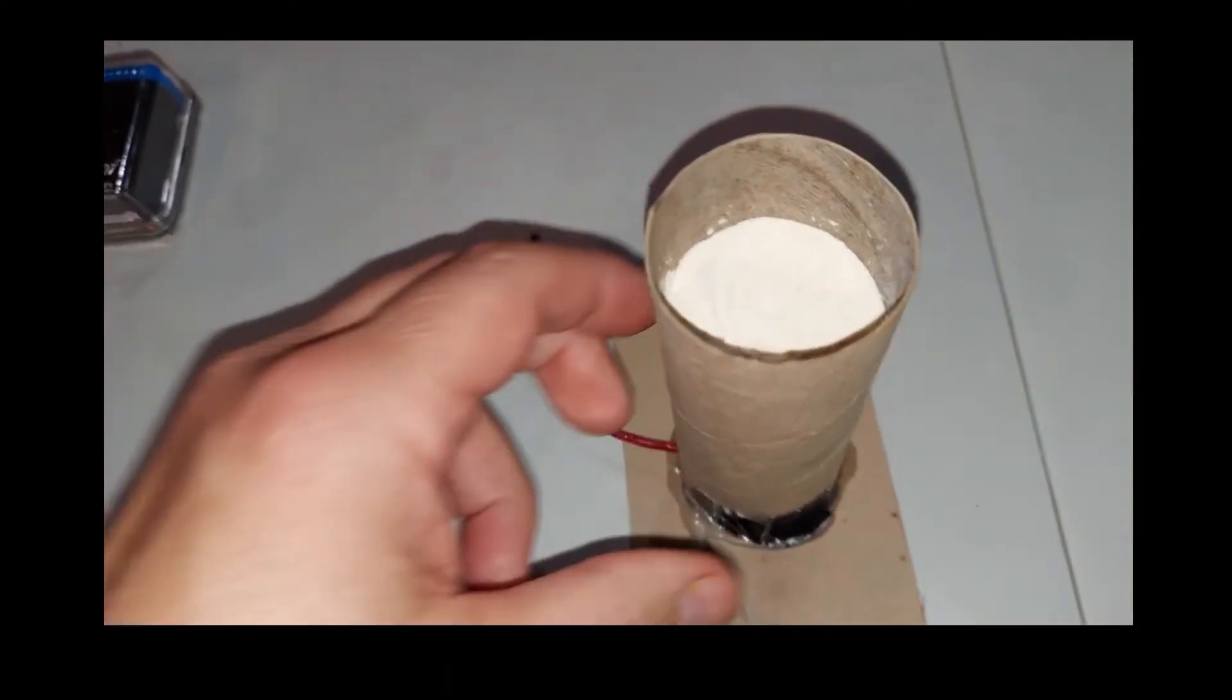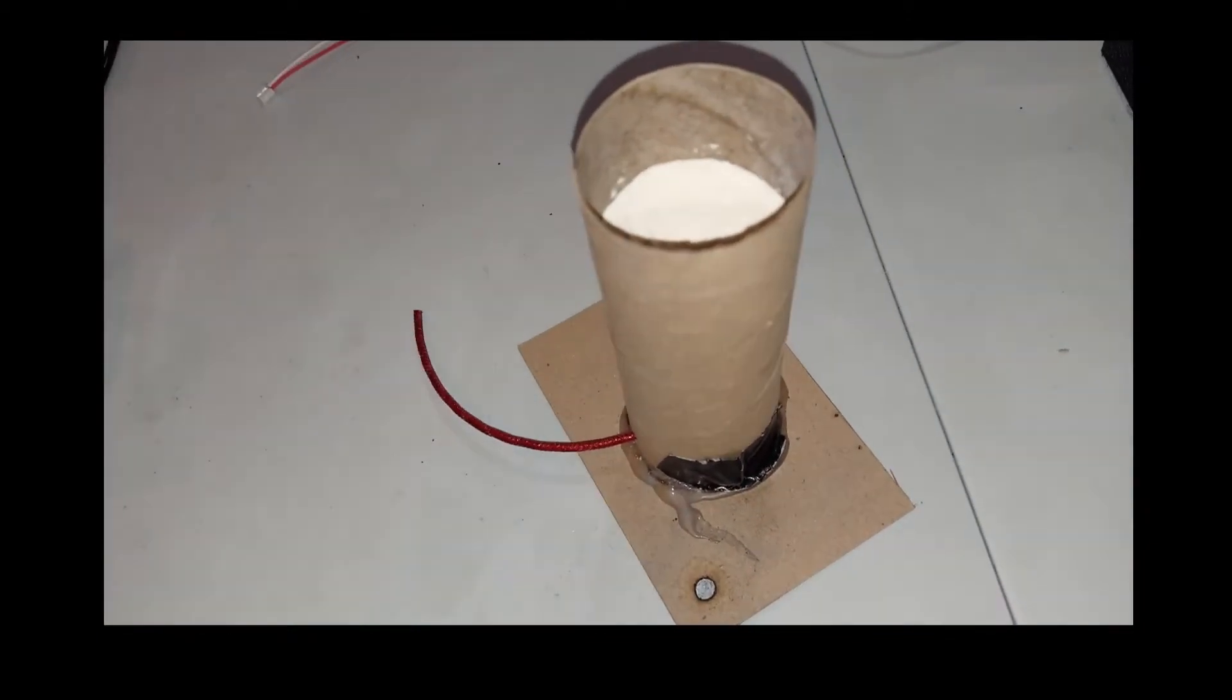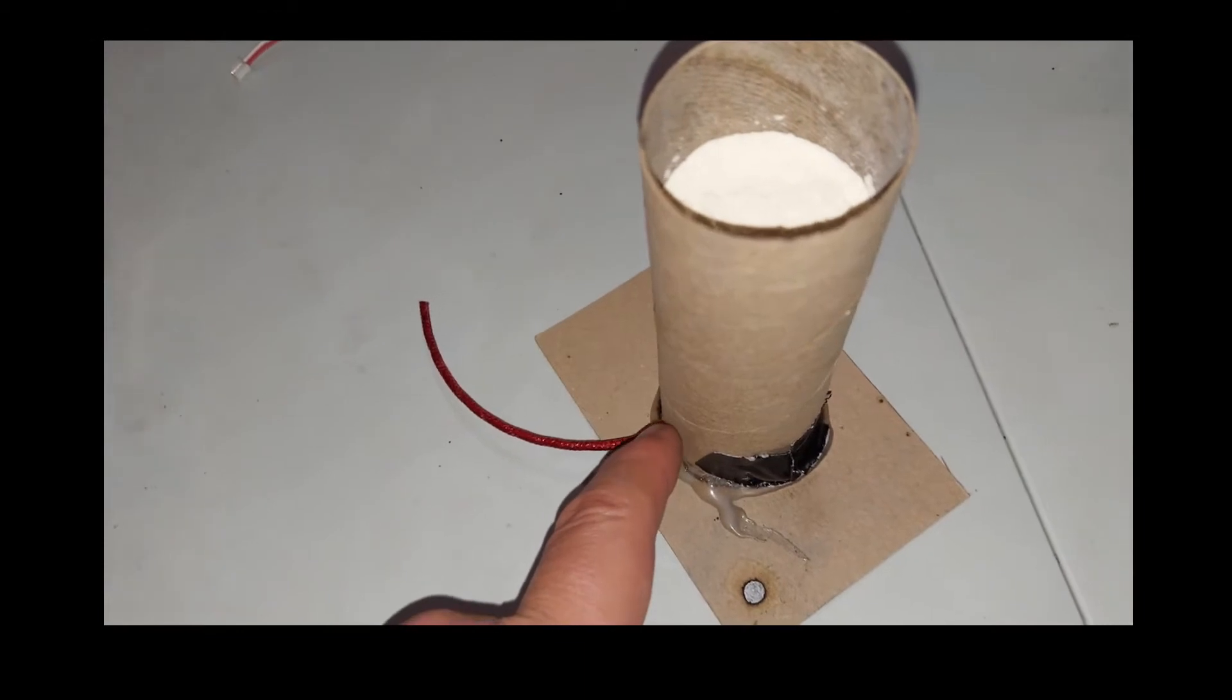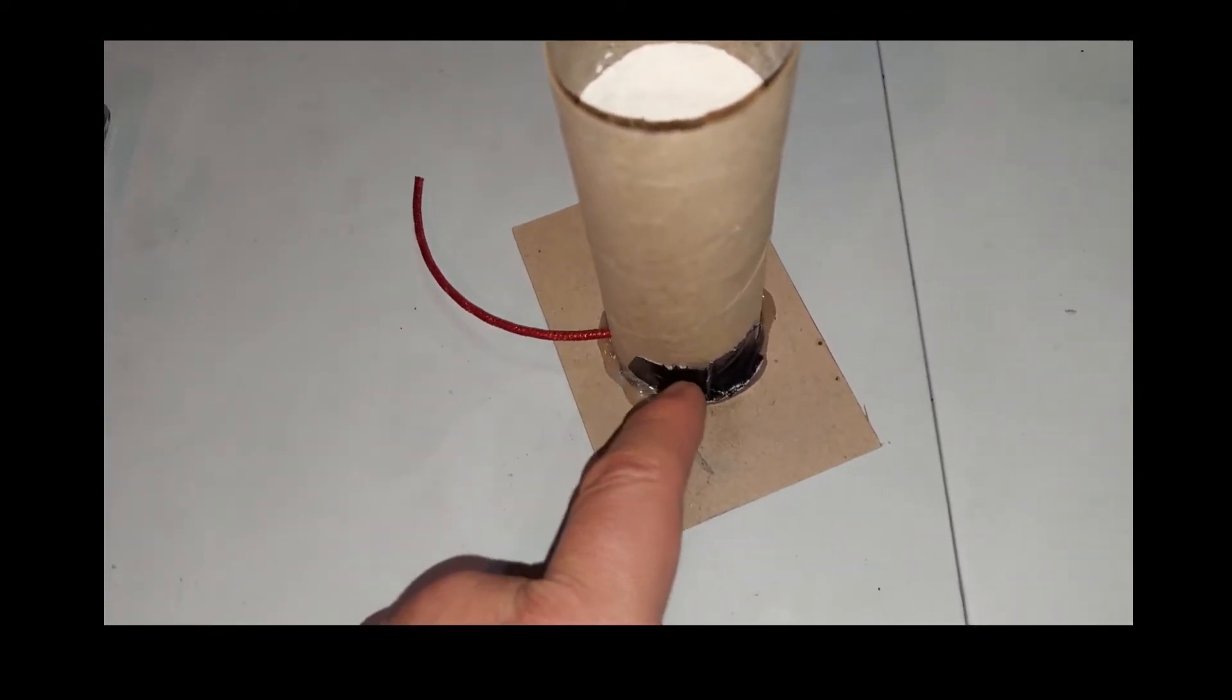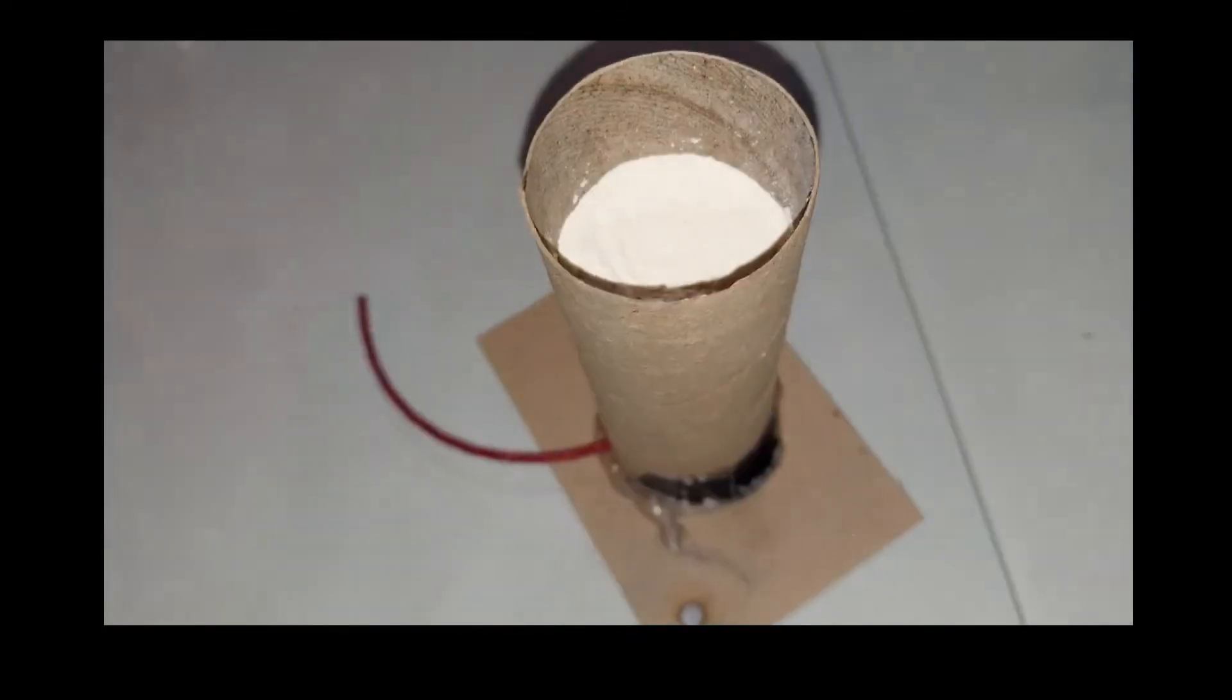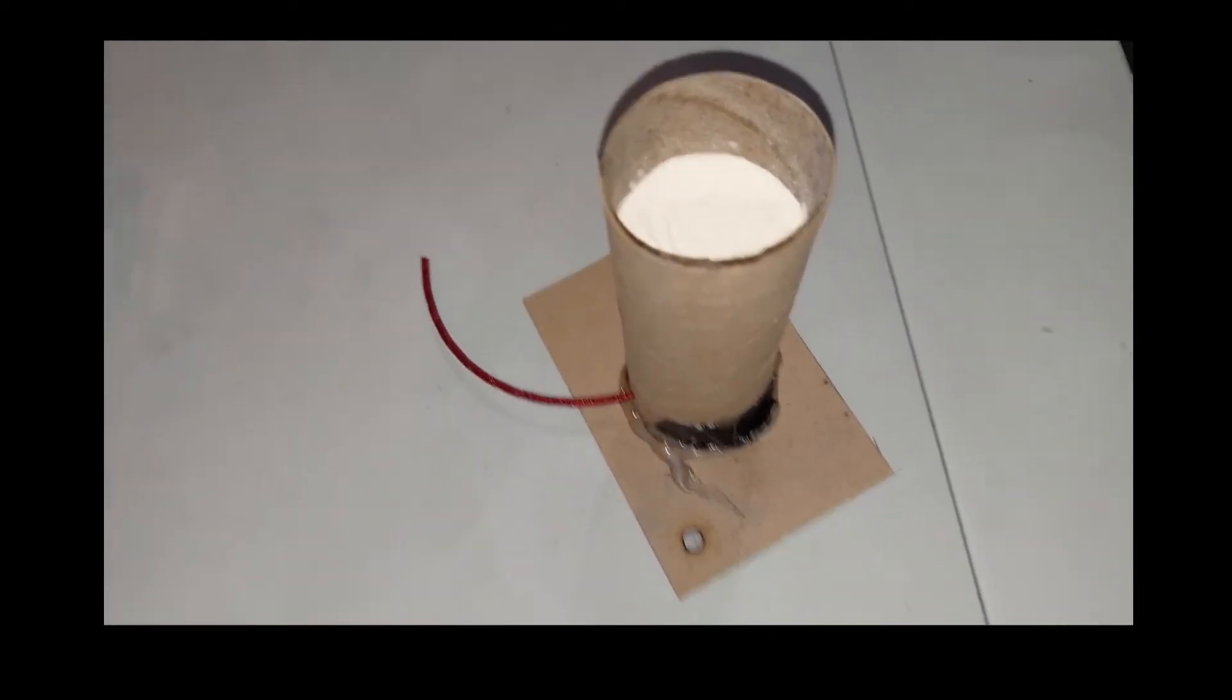So I built another one of these out of a toilet paper roll with a fuse. And the bottom is gunpowder, maybe a quarter inch of it, and then a small piece of paper that protects it from the flour on top. Last time I used coffee creamer, this time we'll use flour and see what happens.